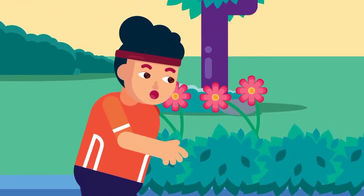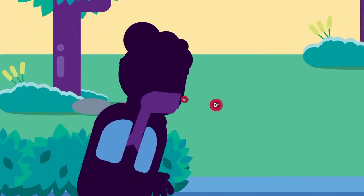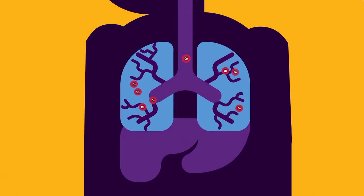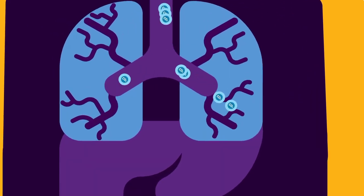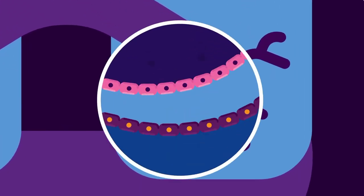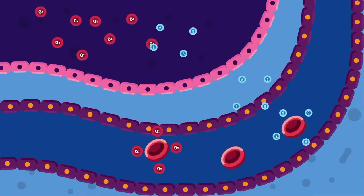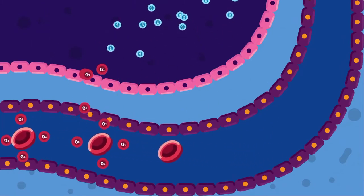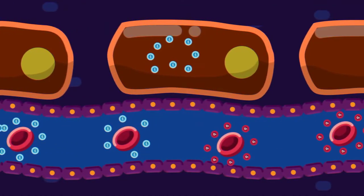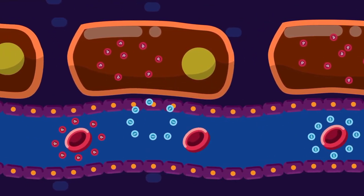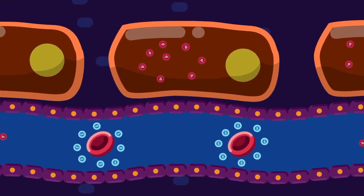Breathing is the process of moving air into and out of the lungs to facilitate gas exchange with the internal environment. This brings in oxygen from the air and flushes out carbon dioxide. Internal respiration is the exchange of substances between blood and cells.